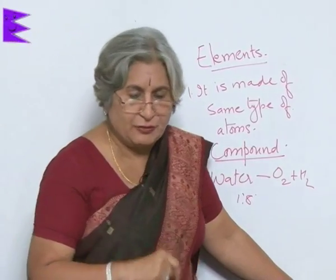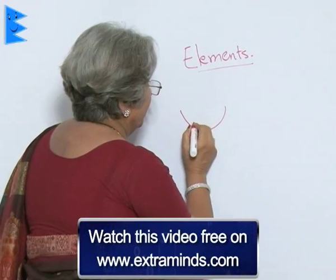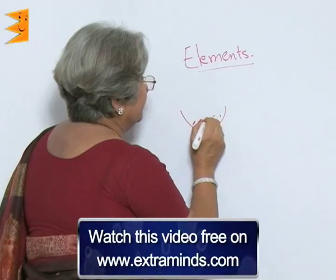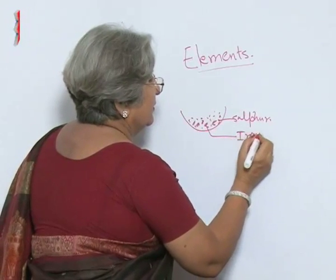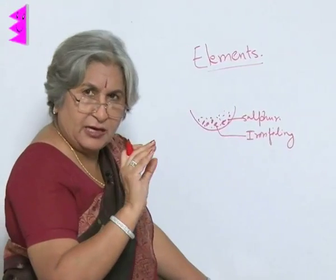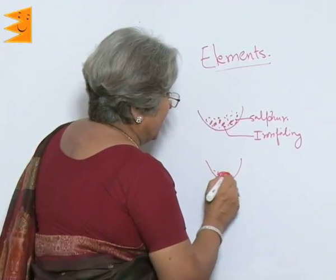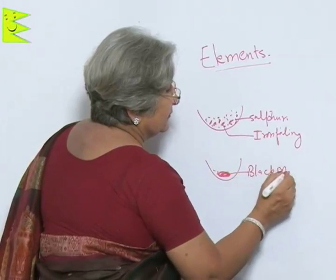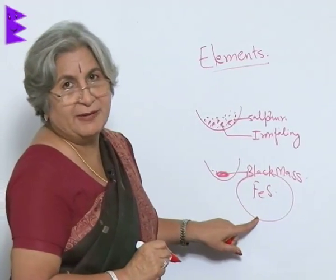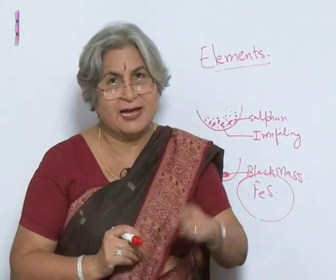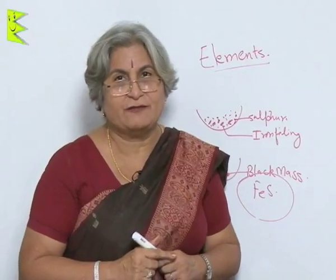To understand compounds better, take some iron filings and sulfur powder and mix them. However well you mix, you will still be able to see yellow color of sulfur and gray color of iron somewhere. In another vessel, heat the mixture and it will become a black mass — that is iron sulfide. This is made up of two elements, iron and sulfur, combined in a fixed ratio, just as hydrogen and oxygen combine in a fixed ratio in water. What they form is a compound.